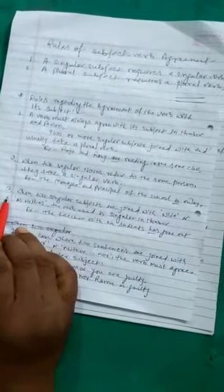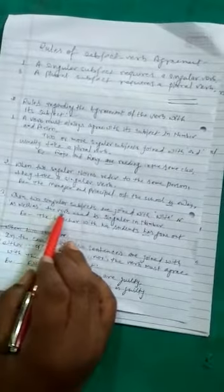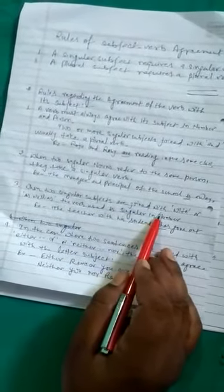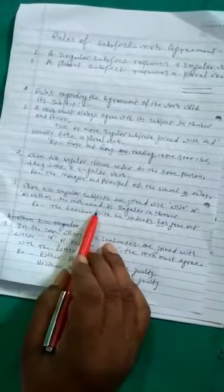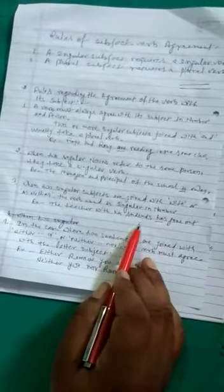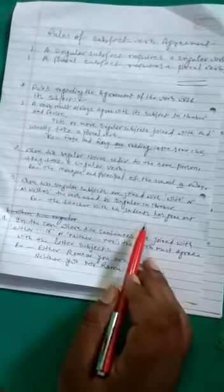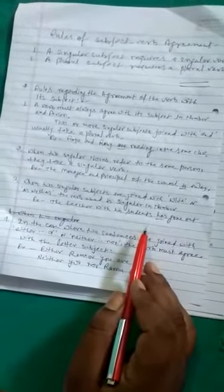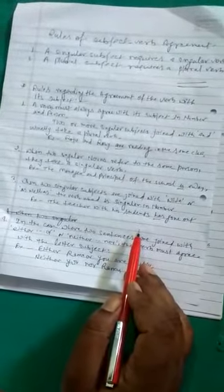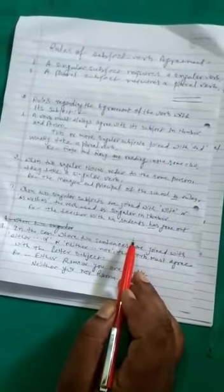Rule third. When two singular subjects are joined with or as well as, the verb used is singular in number. As for example, the teacher with his students has gone out. Another example, the teacher as well as his students has gone out.